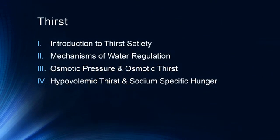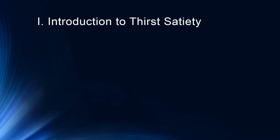Today we'll talk first about thirst satiety, which basically refers to when we know that we've had enough to drink. I'll talk about mechanisms of water regulation and how that works. I'll talk about two different types of thirst: osmotic pressure and osmotic thirst, and then hypovolemic thirst and sodium-specific hunger. All of these are mechanisms designed to regulate the amount of water and the amount of salt and electrolytes within our body. So let's start with a brief introduction to thirst satiety.